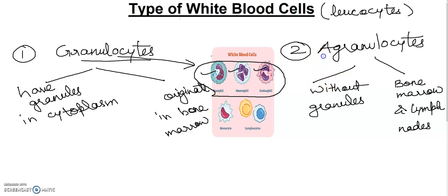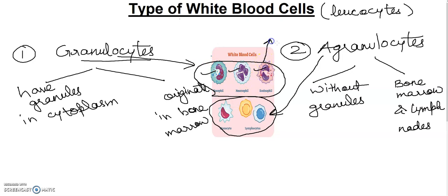For agranulocytes, there are two categories: monocytes and lymphocytes. Now if we talk about eosinophils and neutrophils — starting with eosinophils — they have a lobed nucleus.